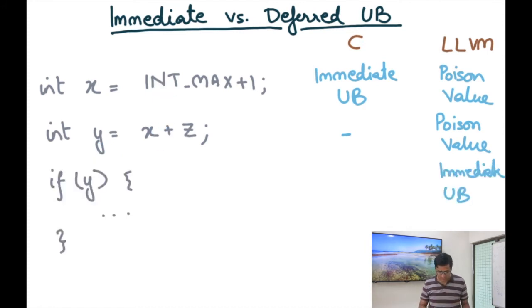And then let's say I do some kind of dangerous operation on y. For example, I could divide by y or I could branch on y and in which case even LLVM now triggers immediate UB. So the idea is that you generate a poison value, but as long as the poison value is not being used in some critical operations or what I'm going to call dangerous operations like branch or the denominator of a division,